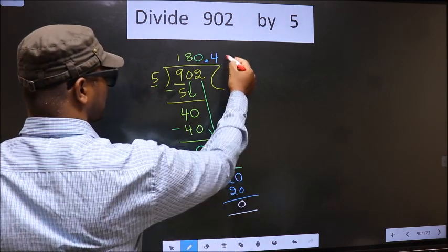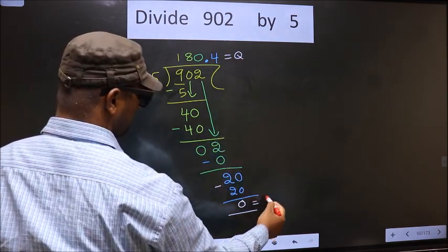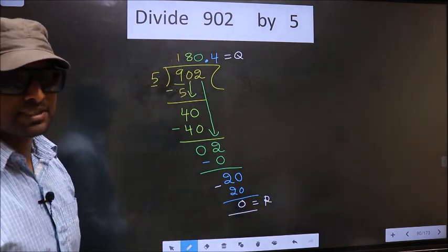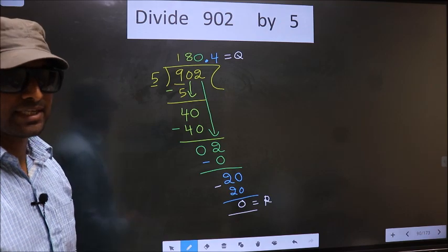Is 0. So this is our quotient and this is our remainder. Did you understand where the mistake happens? You should not do that mistake.